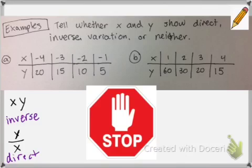Now at this point, I would like you to stop the video and try example b on your own. You're testing whether there's an inverse relationship or a direct variation by testing x times y and y divided by x.